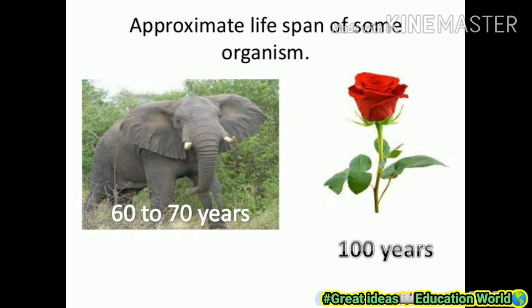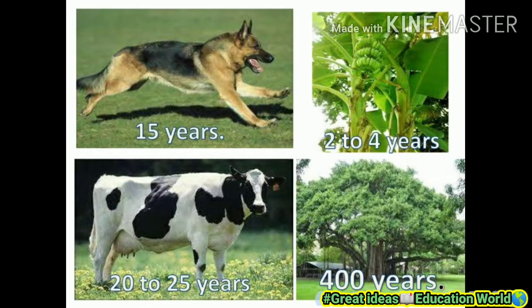There is a big difference between rose plant and elephant life spans. The life span of a dog is 15 years, a banana tree is 2 to 4 years, and a cow lives 20 to 25 years.